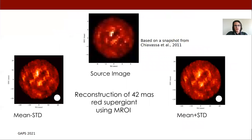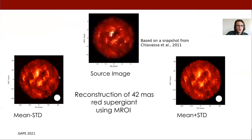I took a snapshot from Andrea Chiavassa's paper and simulated an observation with a 10-telescope MROI. What we get is an unprecedented picture of red supergiants that will let us look at both the large features and the small features, and I'm really excited about what will come from this.